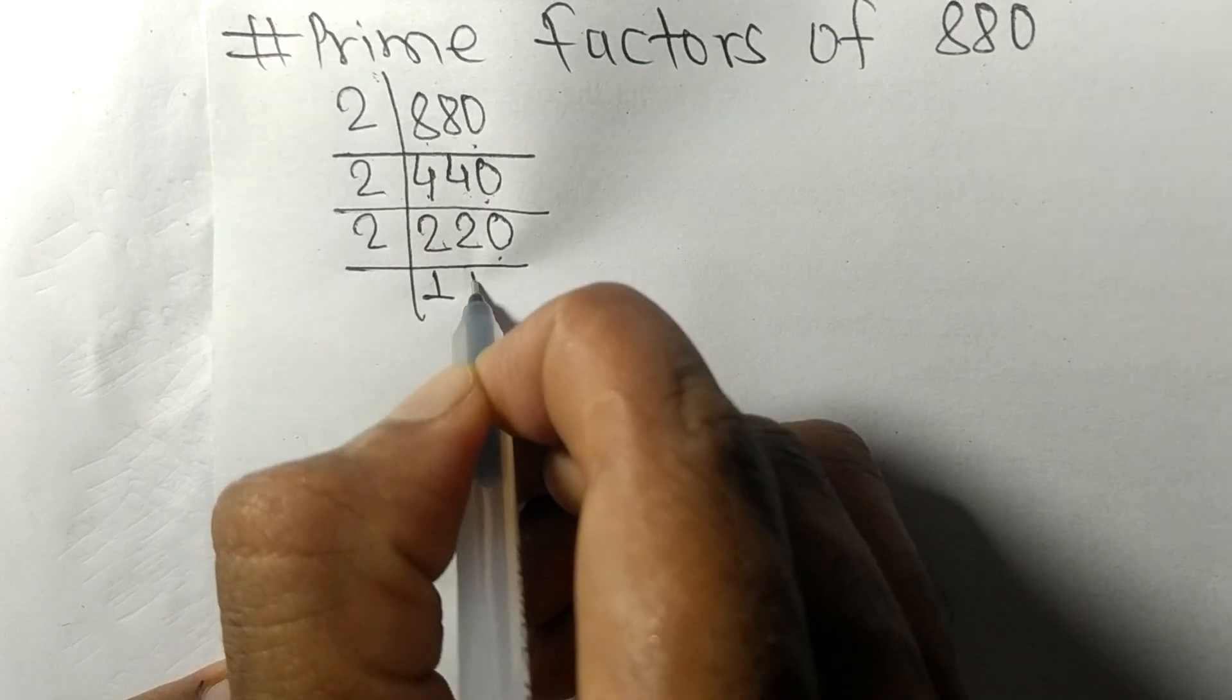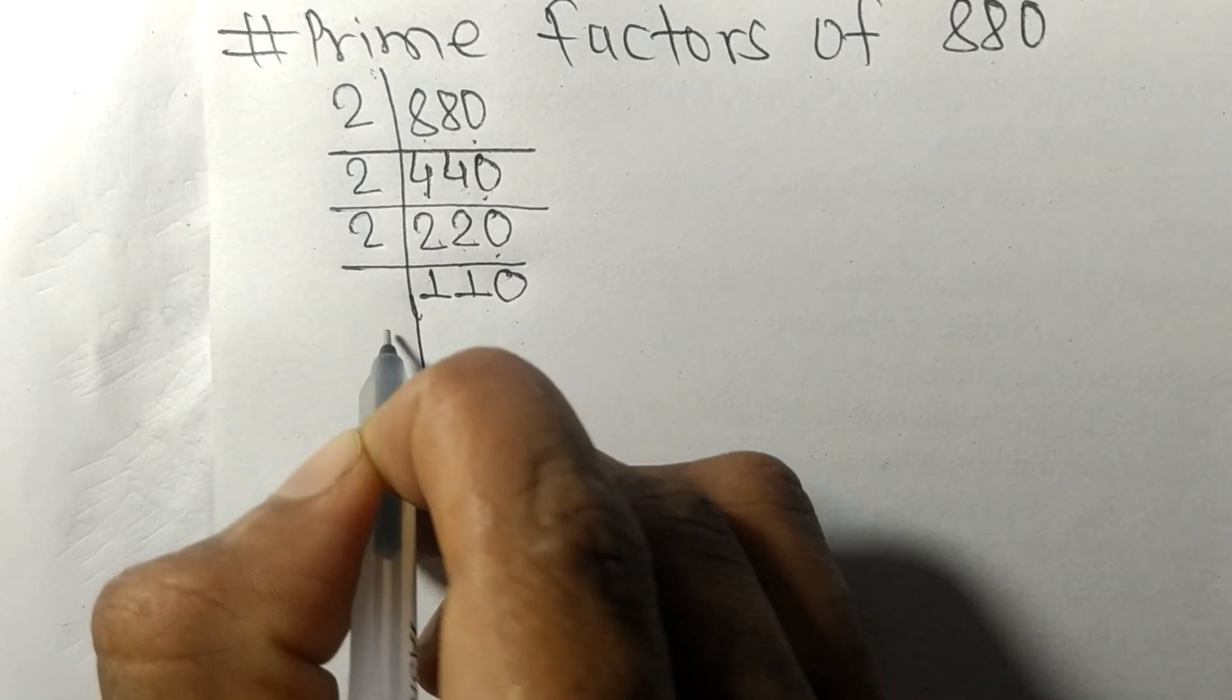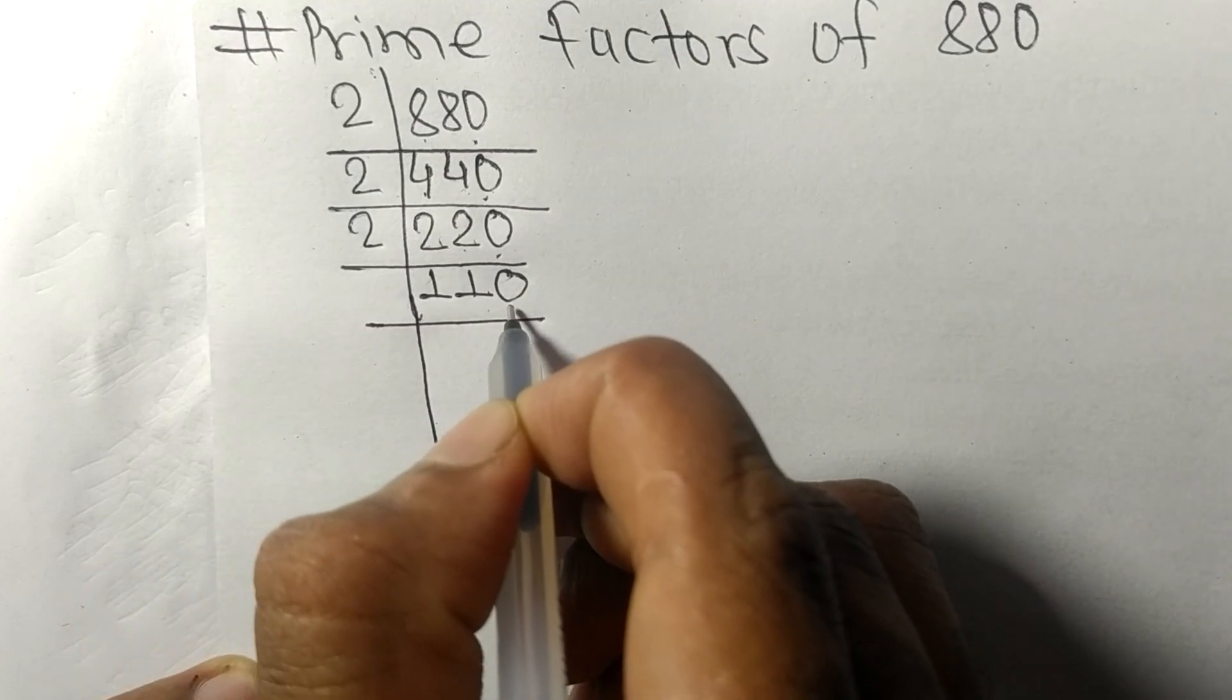Again 0 at the end, so divisible by 2. First we have 11, so 2 times 5 is 10. On subtracting, we get 1 and this 0. Then 2 times 5 is 10.